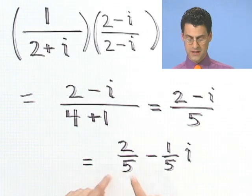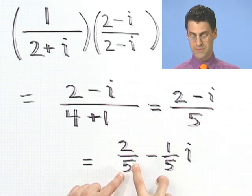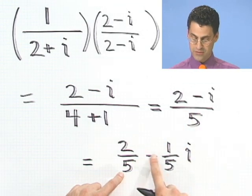It would look like this: 2 over 5 minus 1 over 5i. Because if you combine them, the fives are the same. I just combine the tops, and so I see 2 minus i.